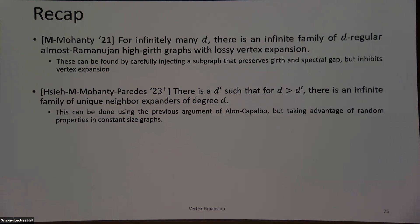Just as a recap: we talked about how we can find an infinite family of D-regular, almost-Ramanujan, high-girth graphs with lossy vertex expansion. These also have localized eigenvectors. And if we relax to unique neighbor expansion, we can find a family of unique neighbor expanders.